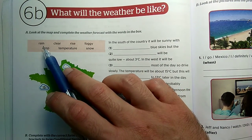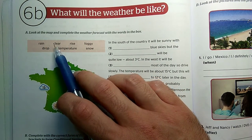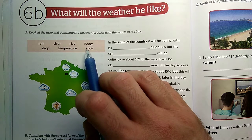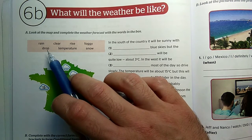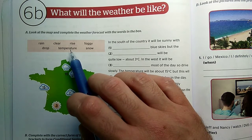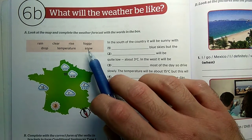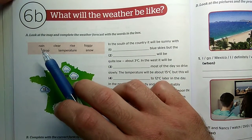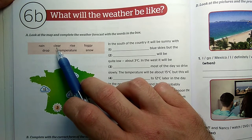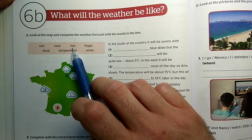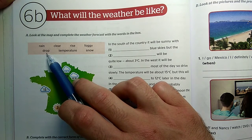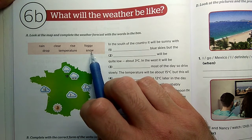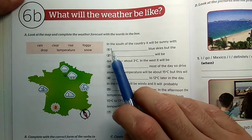Okay look at them and repeat: rain, clear, rise, foggy, drop, temperature, snow. Let's see what each means if you don't know them. Rain is esni or eső, clear is tiszta, rise is emelkedni, the opposite is drop which means zuhan or csökken, foggy is ködös, temperature is hőmérséklet, snow is hó or havazik. Okay, now let's have a look at the text.